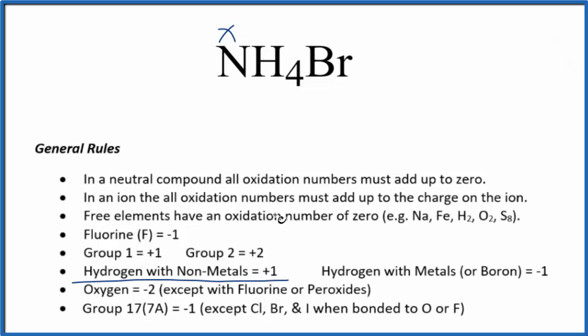Hydrogen, when it's bonded to nonmetals like the nitrogen there, that's going to be plus one for each hydrogen. And then bromine, that's in group 17, sometimes called 7A. That's usually minus one with a few exceptions. So we're just going to call that minus one.